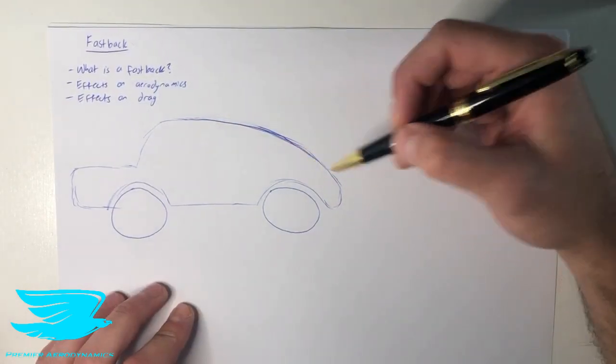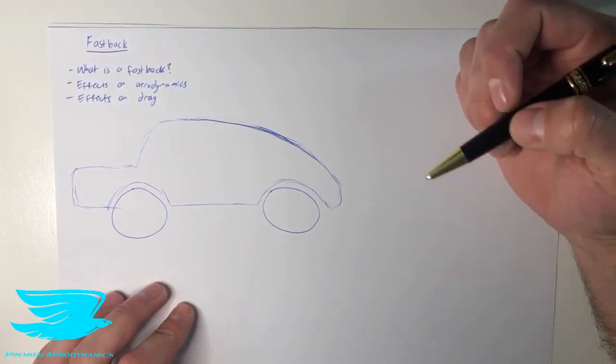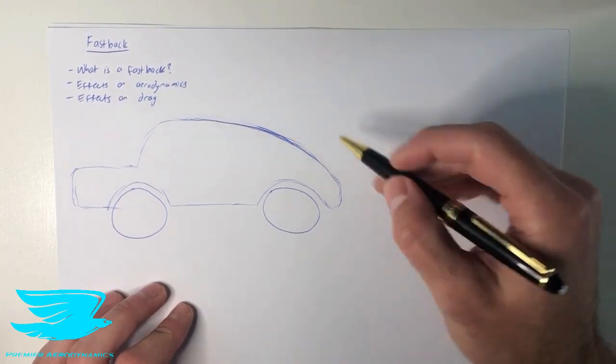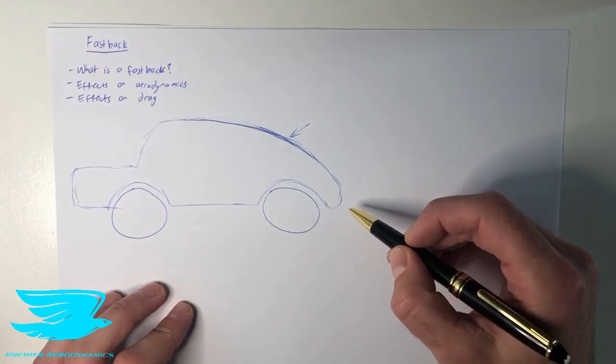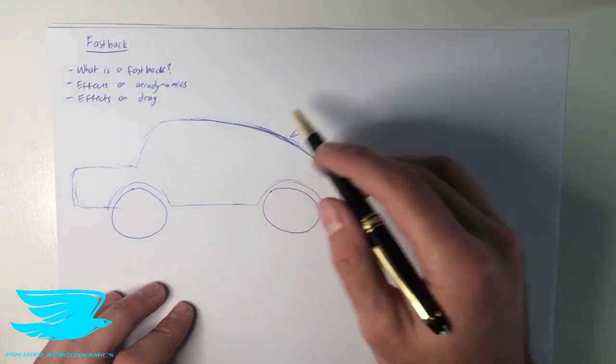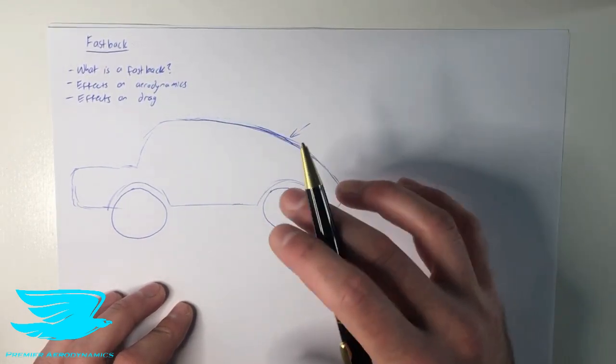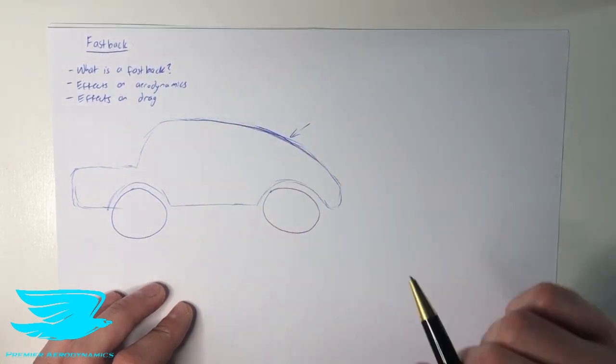So here I have a pretty cool drawing, if I do say so myself, of a car. And the fastback is this point here. So you can see how it comes down in a quite nice sweeping motion. There aren't really too many jagged edges or sharp edges. That's a fastback.